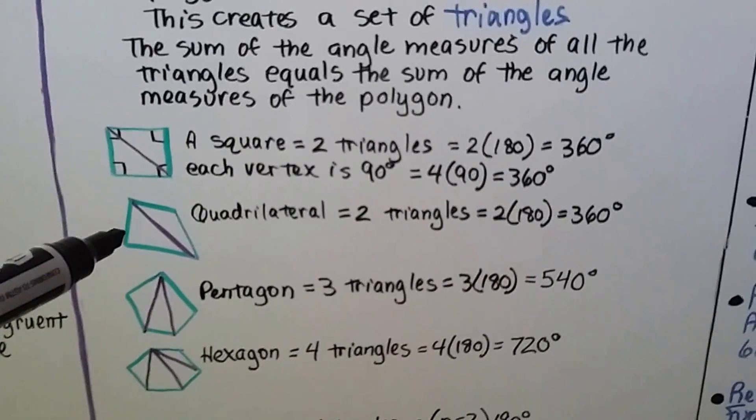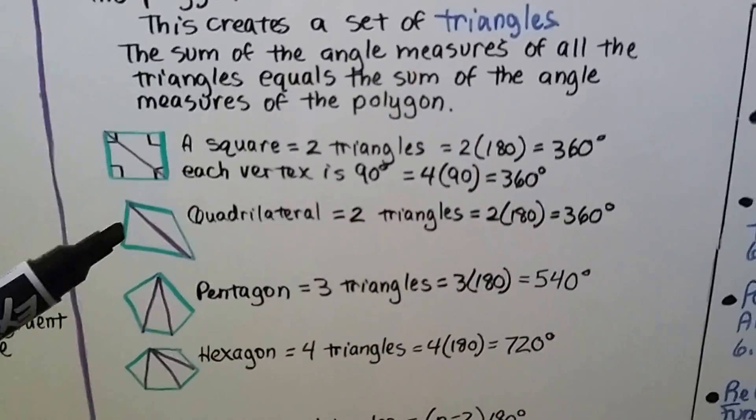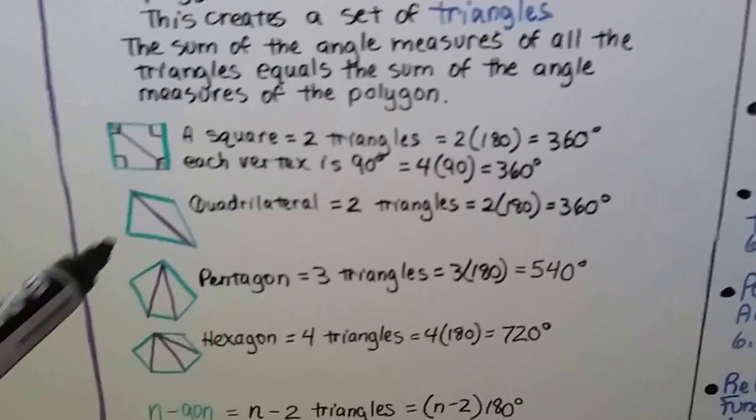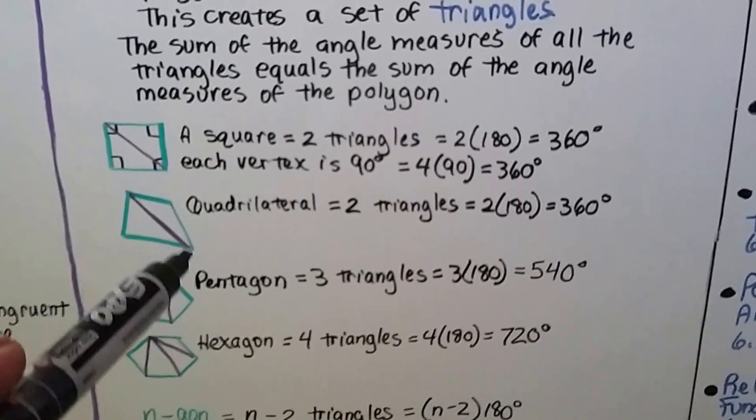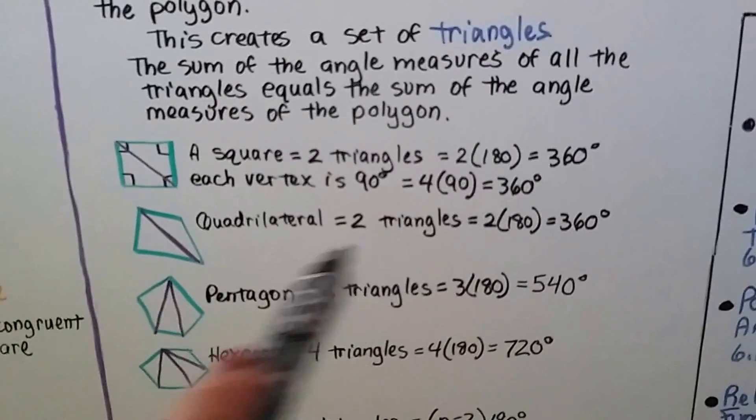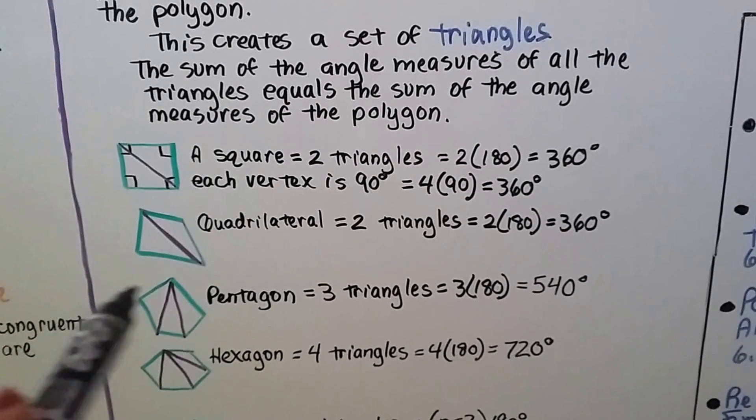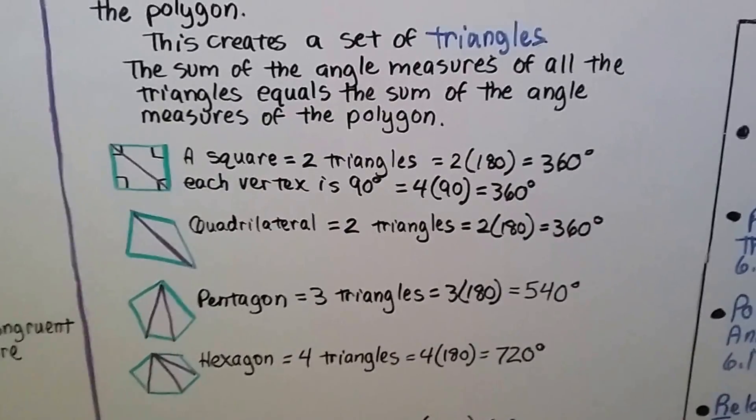Here's a quadrilateral. It's got four sides. Remember, anything with four sides is considered a quadrilateral. We can go to this vertex here and make one diagonal, and that creates two triangles. So that's two times 180, which is 360.